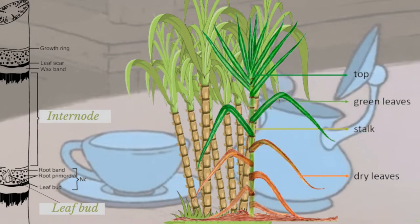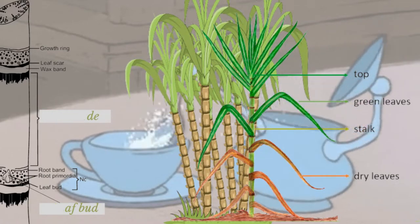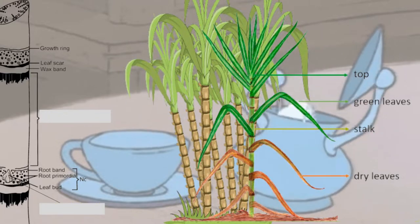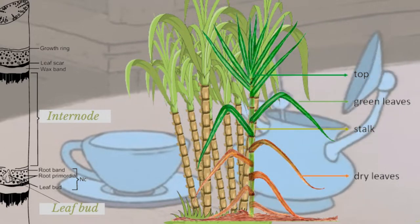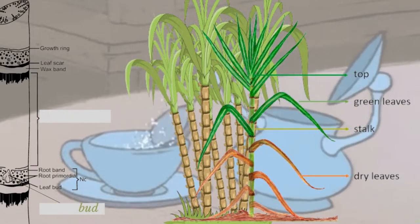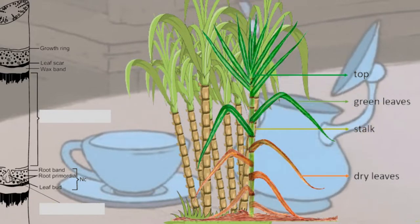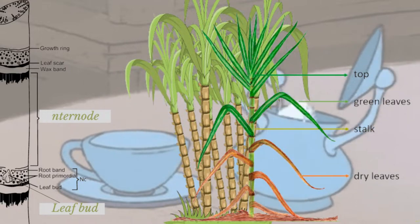Sugarcane is a tall semi-perennial grass from which sugar is extracted. It is between two to six meters tall, with stout jointed fibrous stalks rich in sucrose which accumulates in the internodes of the stalk. Sugarcane typically consists of 12% sucrose, 15% fiber, 70% water, and 3% salts and organic compounds.